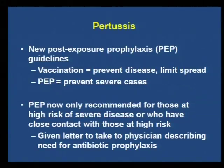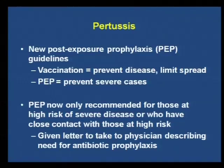For pertussis, we've changed our guidelines a bit. Post-exposure prophylaxis is now to prevent severe cases rather than to prevent disease and limit spread more broadly. Previously, if local public health deemed you a close contact of a pertussis case, you were recommended to get prophylaxis. Now prophylaxis is only recommended if you are considered high risk for pertussis or if you have contact with someone deemed high risk. We send a letter home explaining this, with information on treatments for providers to reference.